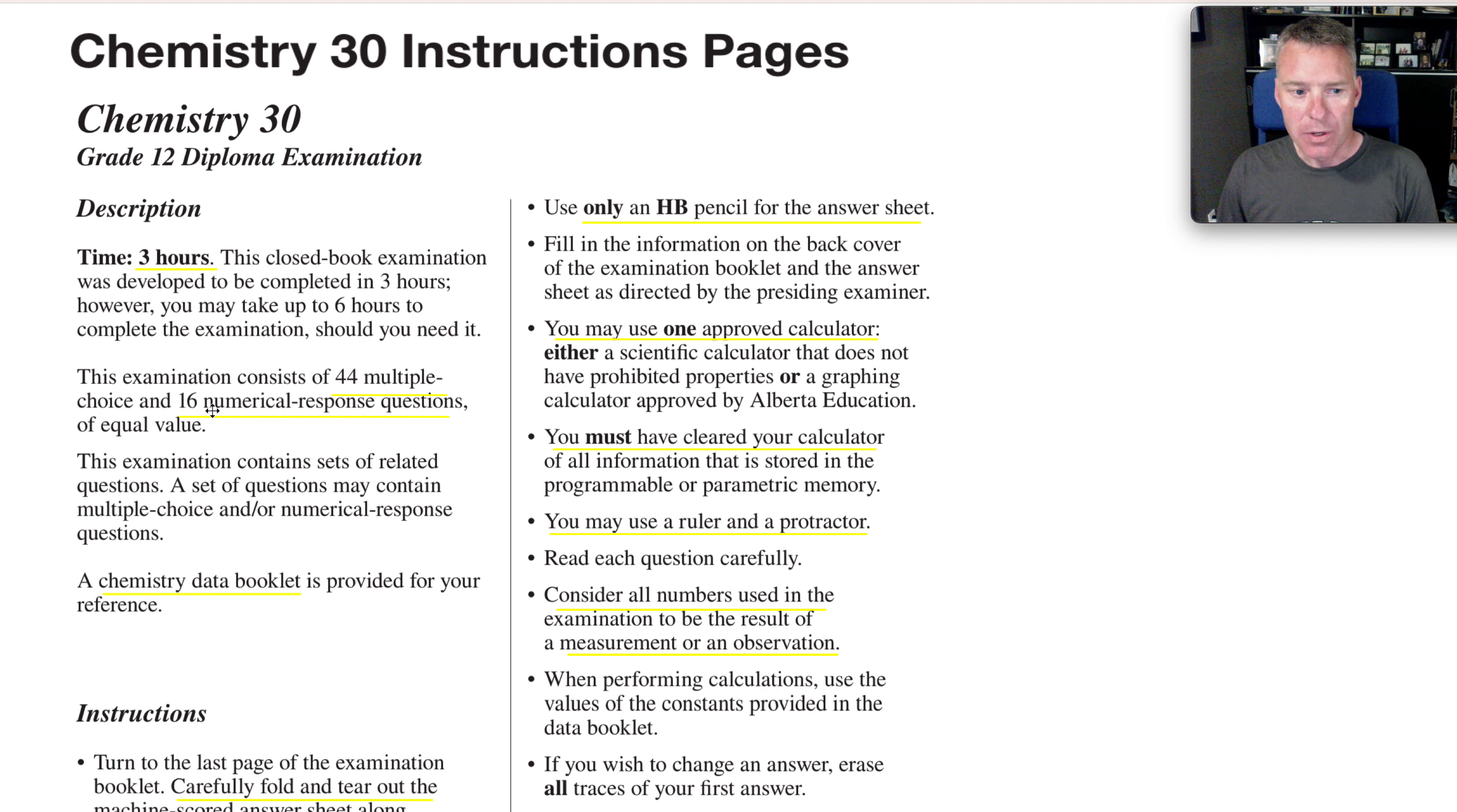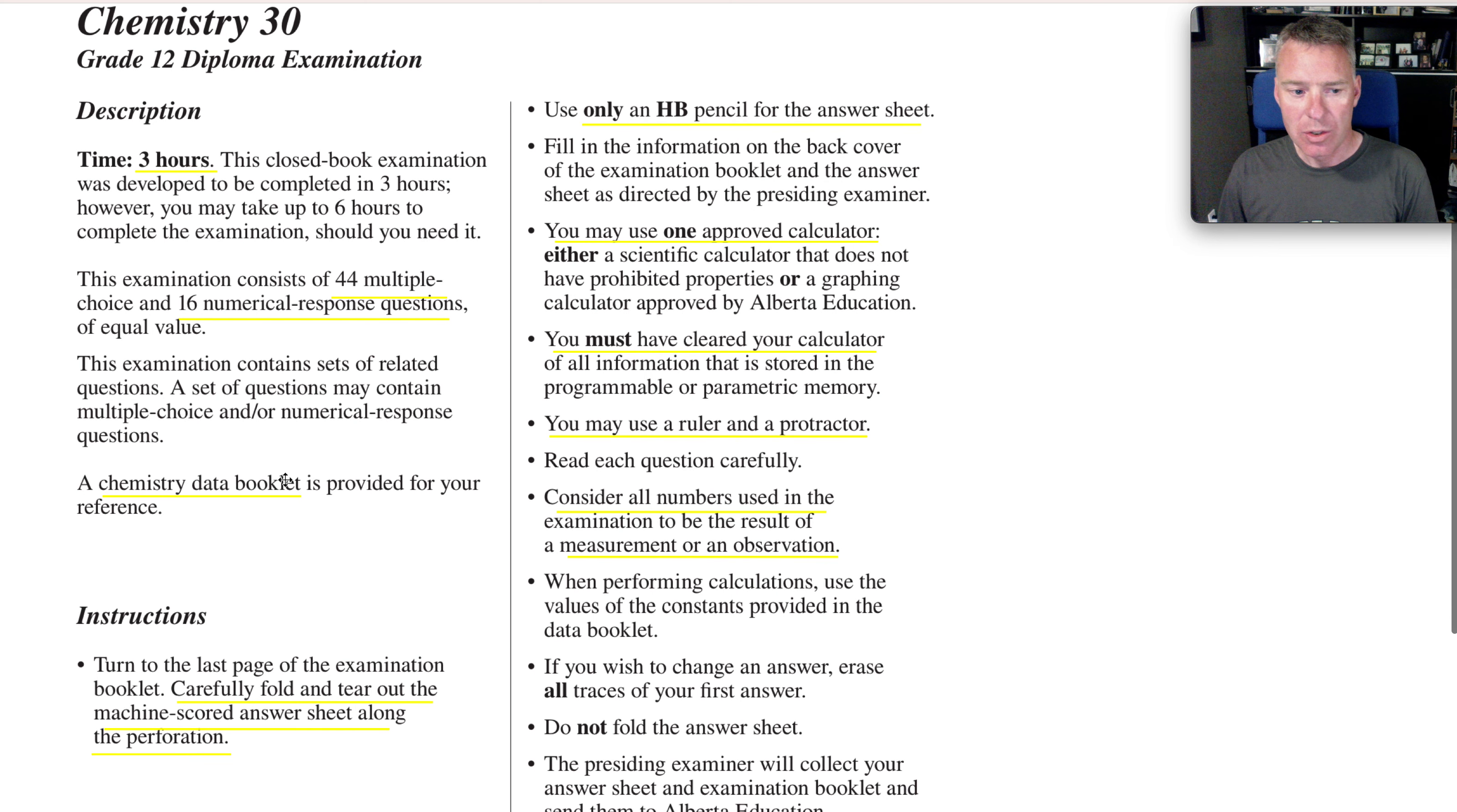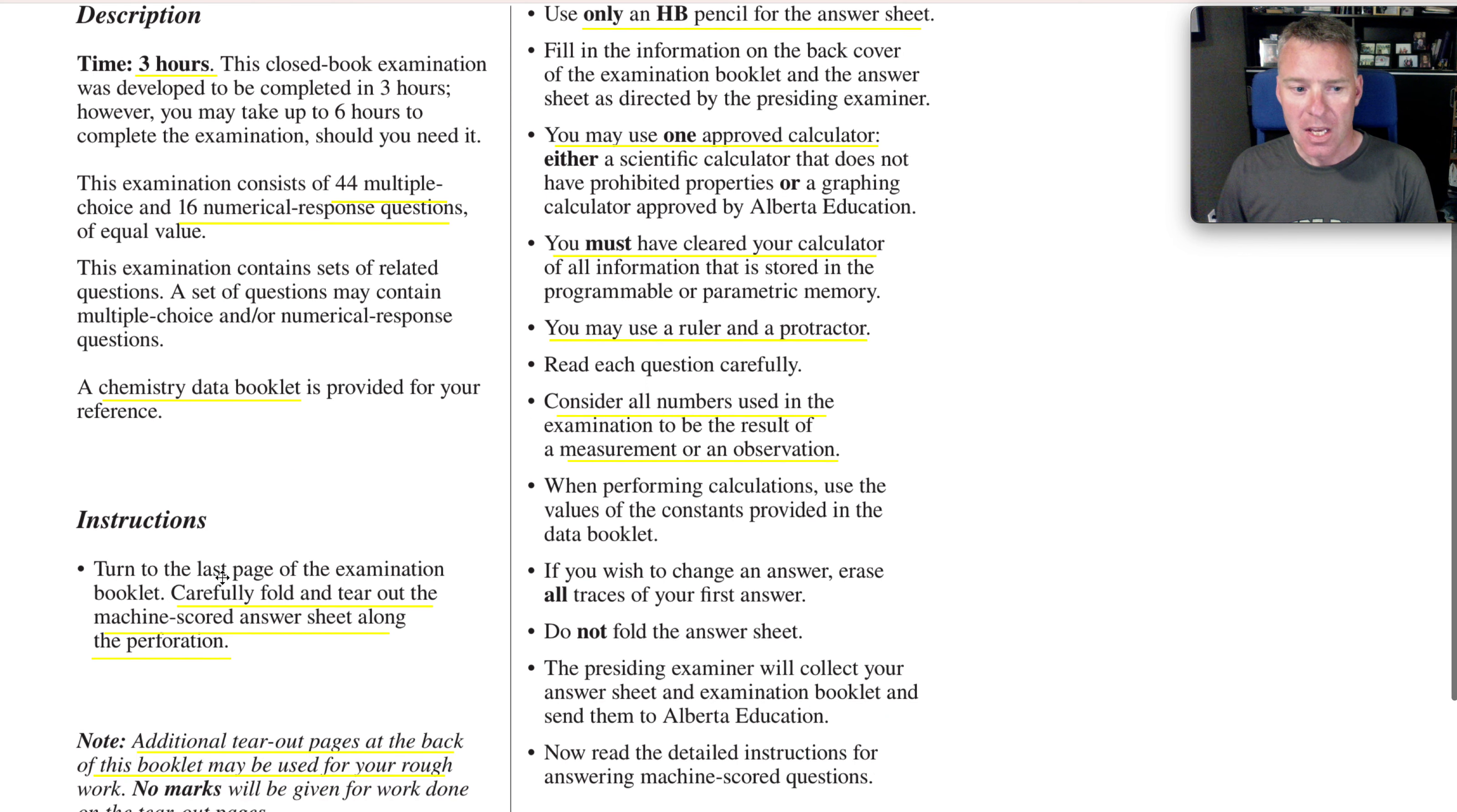Already talked about the 44 and the 16 questions. You will get a nice clean chemistry data booklet, that orange booklet that you might have been given from your teacher. You are told that you need to tear out the last page or the machine scoring page. I would do that right away and I would be bubbling things in as you go. Some students like to do it at the end. That is more easily done with the double time. When you didn't have double time, I'd really encourage students to fill in as you go, so you're not panicking at the end.